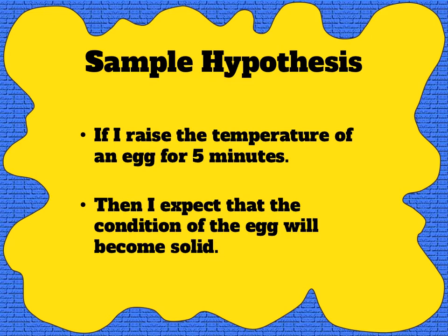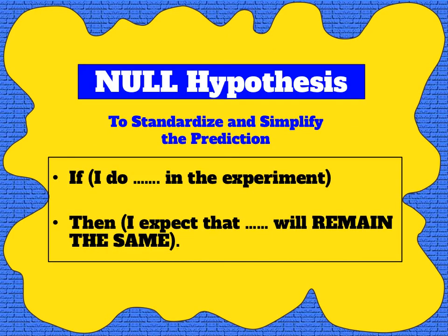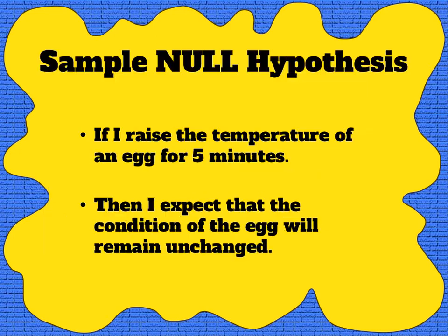It's pretty clear what the experimenter is going to do — I can see the action and the prediction of the outcome. Predicting an outcome simply and clearly can be problematic for many experiments. As a result, many scientists rely on a null hypothesis to make this easier. A null hypothesis predicts that the action of the scientist will have no impact on the outcome and that after the experiment the measurements will remain the same. Changing our previous hypothesis to a null hypothesis changes the second statement: 'If I raise the temperature of an egg for five minutes then I expect that the condition of the egg will remain unchanged.'